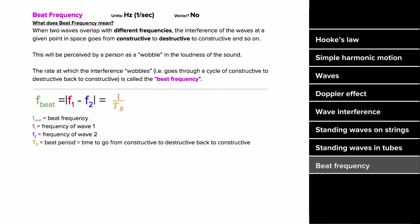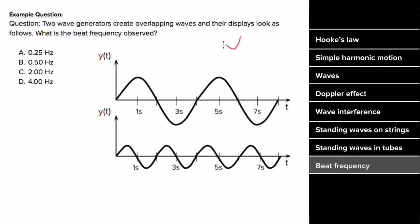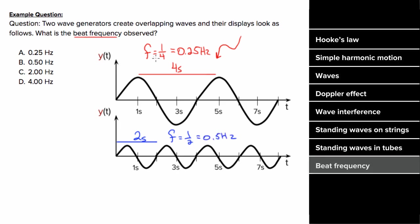To determine the beat frequency, you simply take the difference of the two overlapping wave frequencies. If the waves have the same frequency, the beat frequency is zero — no wobbles. The further apart the two frequencies, the more wobbles per second. The beat period is one over the beat frequency. For example: if one wave has a period of 4 seconds (frequency = 0.25 Hz) and the other a period of 2 seconds (frequency = 0.5 Hz), the beat frequency is 0.5 minus 0.25 = 0.25 Hz.